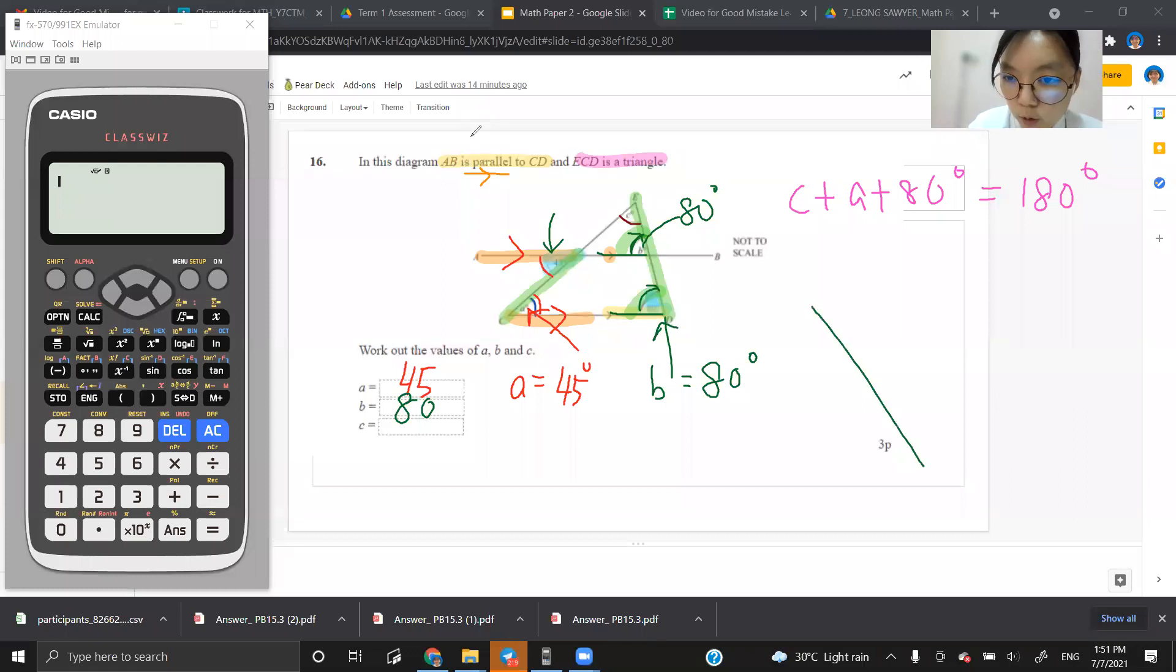So when two lines cross, in this case, the two lines are here. This line, I mark with maybe brown. This line and this line, when they cross each other, this angle is actually the same as this angle. This is called vertical opposite angle. If this is 45 degrees, therefore, here would be 45 as well.